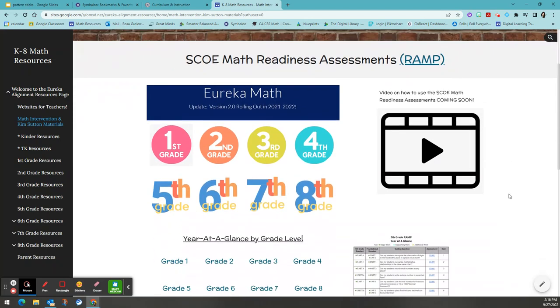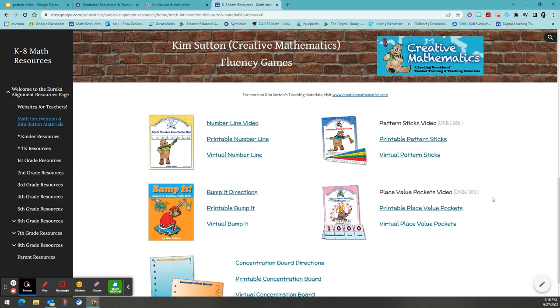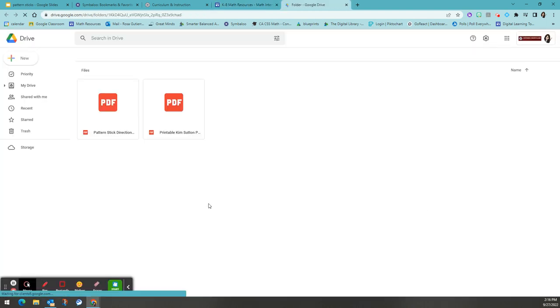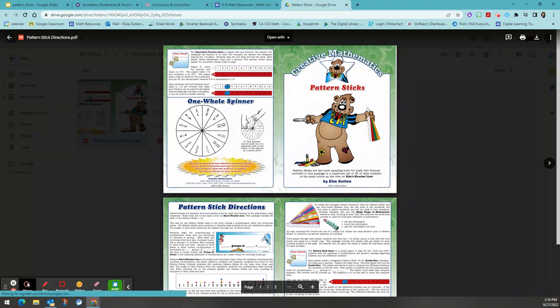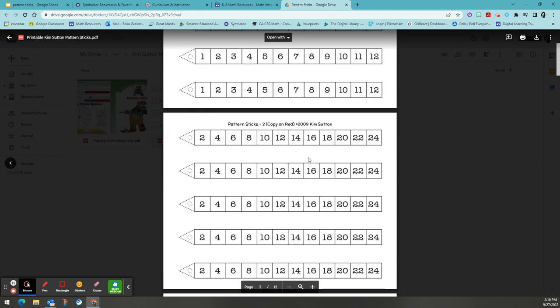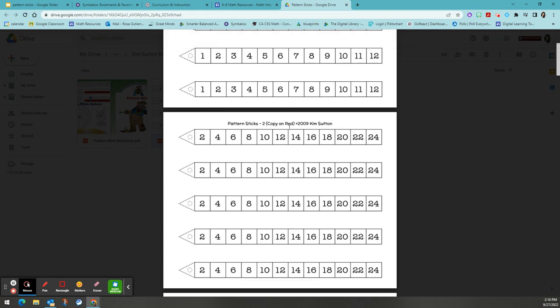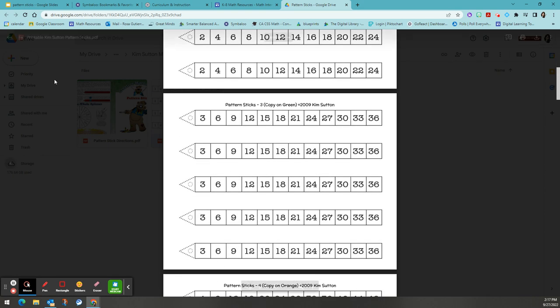You will scroll past the math readiness assessments that we have for intervention and you will find all of our Kim Sutton resources available to you. Pattern sticks are available in both a printable and a virtual form. The printable pattern sticks come with both the directions that you will need to implement these in your classroom, as well as the PDF that you will need to print these pattern sticks out. Each page should be copied on a different colored paper to match the numbers on the number line. So the two should be copied on red, three should be copied on green, and so forth.